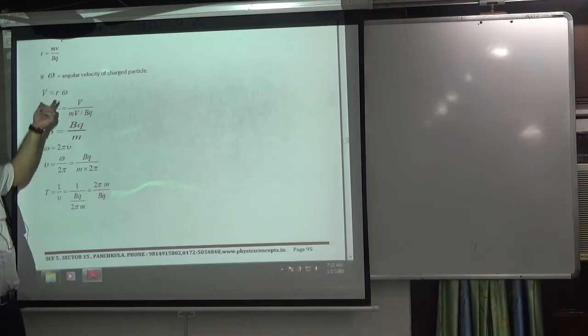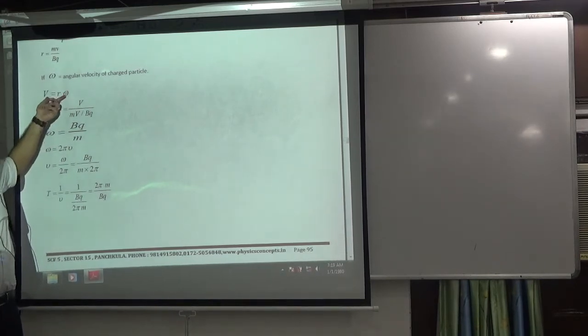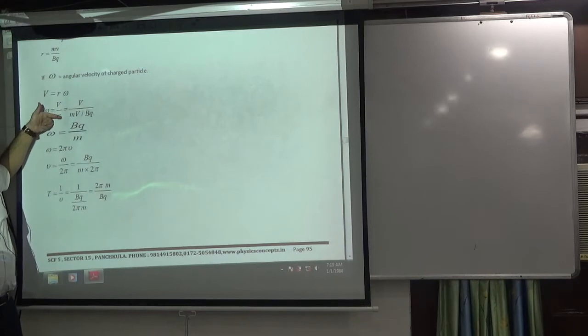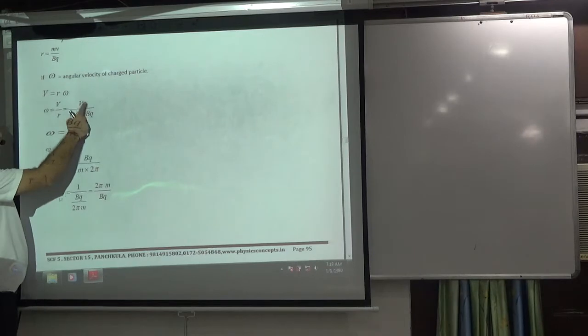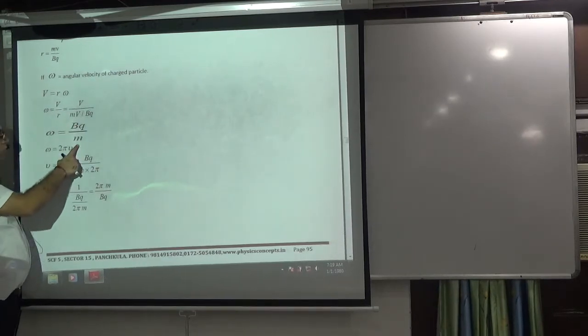So remember that in circular motion, v is equal to r omega. Omega is equal to v by r. Remember. Where r is mv by bq. If v cancels, then bq by m. So what will omega be?